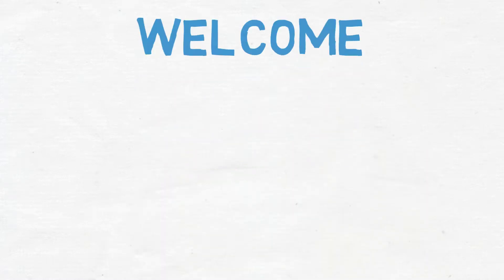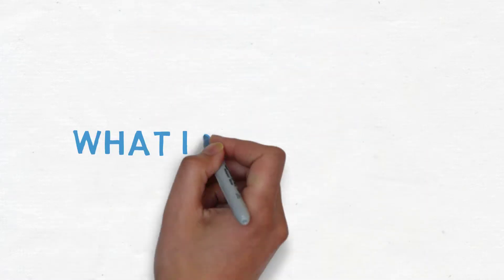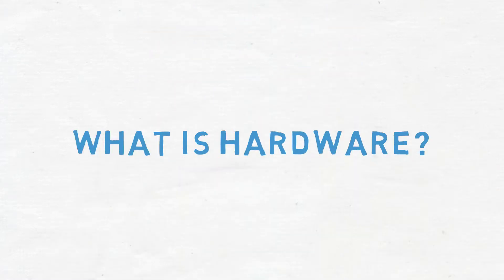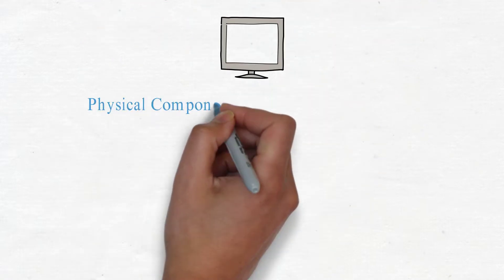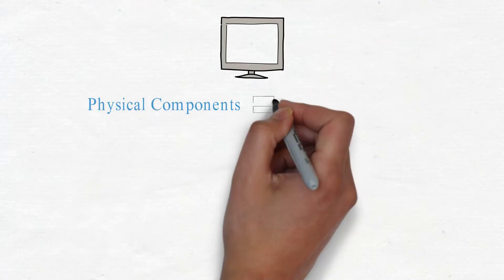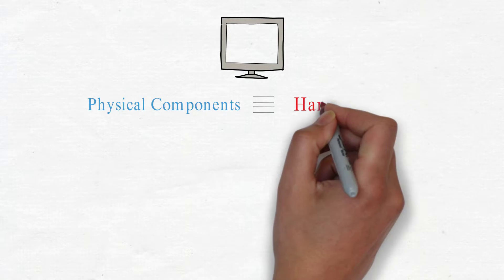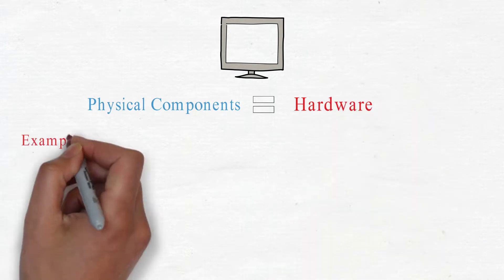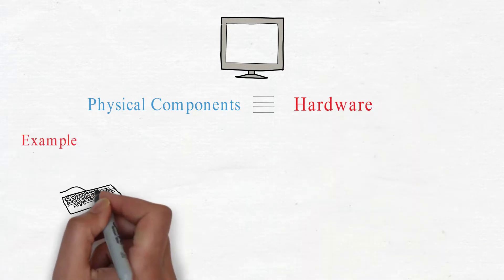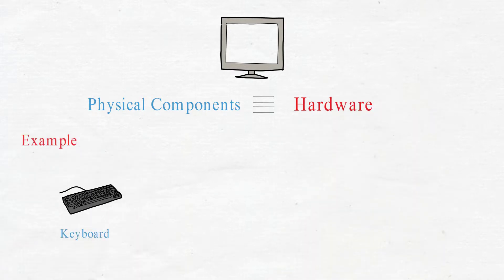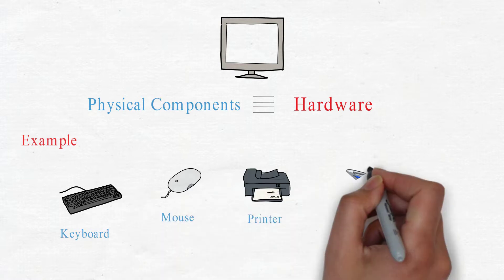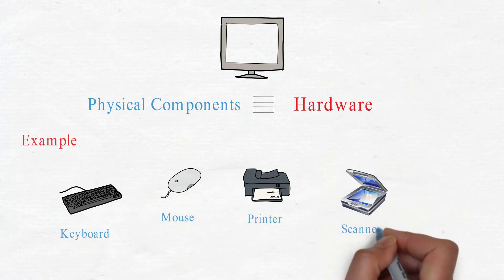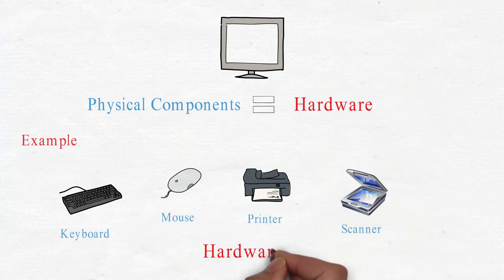Welcome. What is hardware? The computer's physical part is known as the hardware of a computer. Examples like keyboard, mouse, printer, scanner etc. are hardware devices.